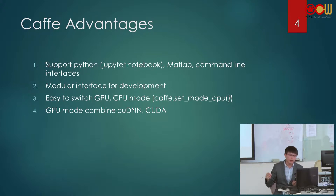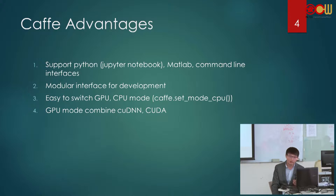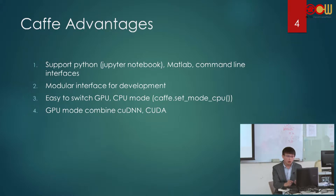Then you can use CPU to process the net. The fourth point is Caffe's GPU mode combines cuDNN and CUDA. CUDA is a GPU-accelerated library of parameters for deep neural networks — it is a parallel computing platform that allows Caffe to process the net on GPU.